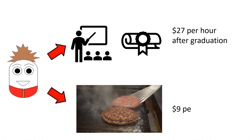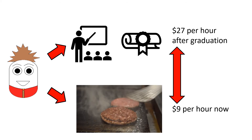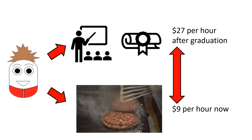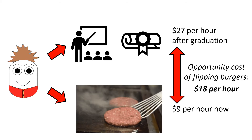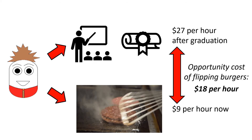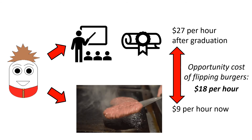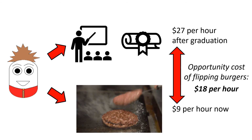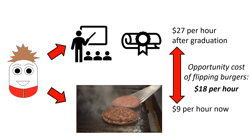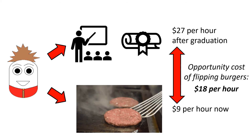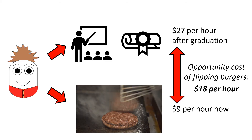Here's the opportunity cost. If he chooses flipping burgers instead of studying, then he walks away from an additional $18 per hour that he could be making in the future. Tim quits his job at the fast food restaurant, walking away from making $9 per hour now, and goes to study instead, which puts him on the road to $27 per hour in the future.